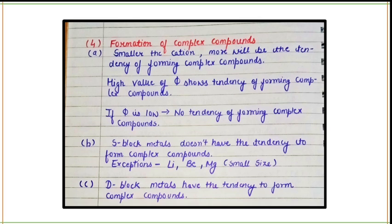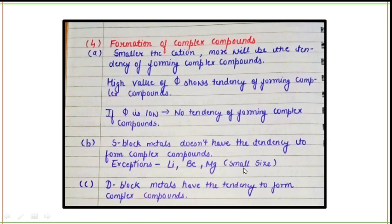Point four is the formation of complex compounds. Smaller the cation, greater will be the tendency to form complex compounds. As the value of phi increases, the tendency to form complex compounds also increases. If the value of phi is low, there will be no tendency to form complex compounds. That's why s-block metals generally do not have a tendency to form complex compounds, with exceptions being lithium, beryllium, and magnesium, which can form complex compounds due to their small size. D-block metals also have the tendency to form complex compounds.